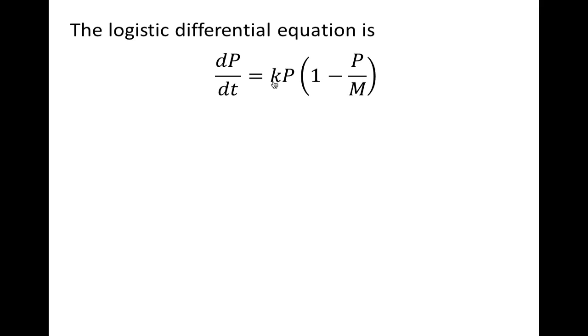A couple of things to note. If we divide both sides by p, we'll end up with what's called the relative growth rate. 1 over p dp dt is equal to a constant times this quantity, which means that the relative growth rate is linear.